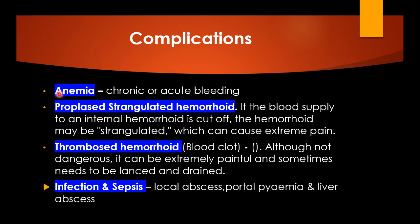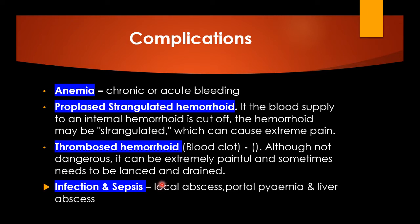Complications of hemorrhoids include anemia from chronic bleeding, and sometimes acute hemorrhage causing hemorrhagic shock requiring emergency treatment. Prolapsed and strangulated hemorrhoids occur when the blood supply of the internal hemorrhoid is cut off, causing extreme pain. Thrombosed hemorrhoids, while not dangerous, are extremely painful and need to be drained as soon as possible. Infection and sepsis can lead to local perianal abscess formation or portal pyemia, which can result in liver abscess — a very serious complication.